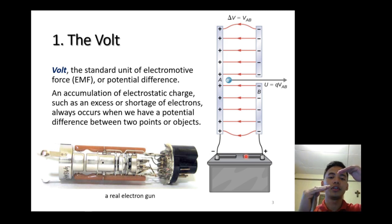The accumulation of electrostatic charge, such as an excess or shortage of electrons, always occurs when we have a potential difference between two points or objects. If we put an electron in between two conductors, there's an energy.